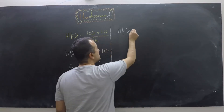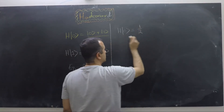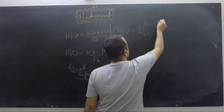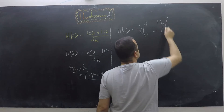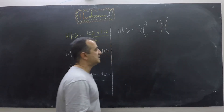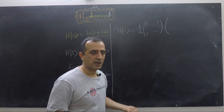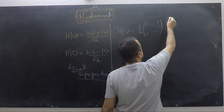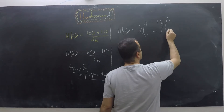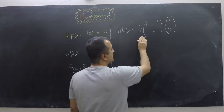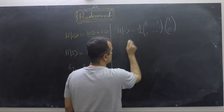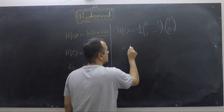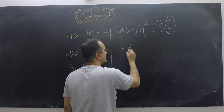So I apply the Hadamard gate on |0⟩. This is basically multiplying the matrix that represents the Hadamard gate with the vector for |0⟩. The vector |0⟩ has 1 in the 0th position and 0 in all other positions. So now we multiply this matrix with this vector, and we get 1 over square root of 2.